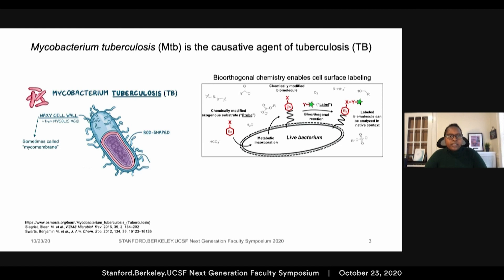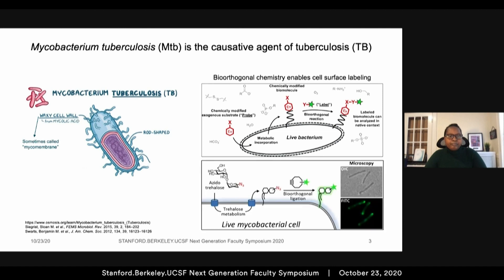We chemically modify it with a handle that, once inserted into the organism, will selectively interact with a complementary reporter molecule of your choice without disturbing the biological system. For instance, trehalose, a sugar component of the mycomembrane, can be decorated with an azide group and fed to MTB. Once on the cell surface, the azide-modified trehalose would selectively interact with a cyclooctyne molecule attached to a fluorescent reporter in a bioorthogonal reaction step.